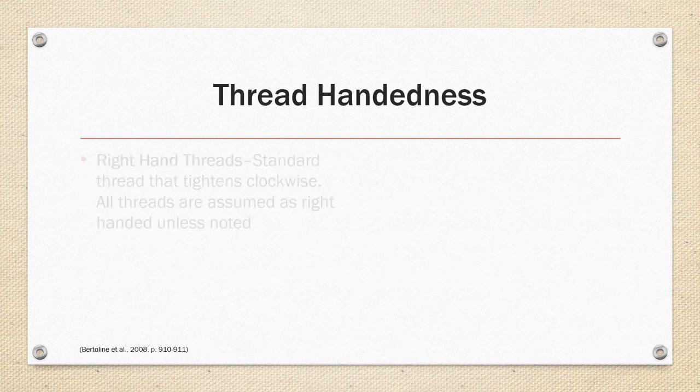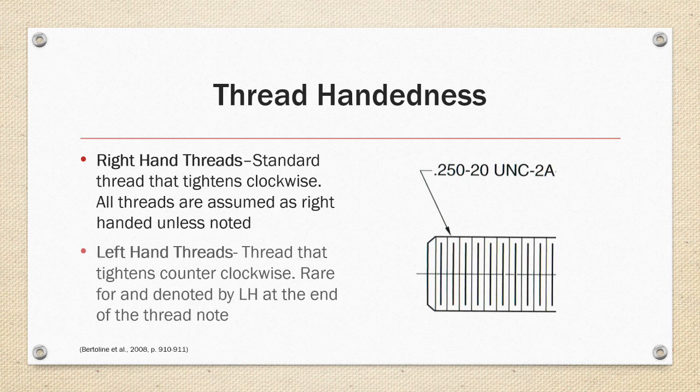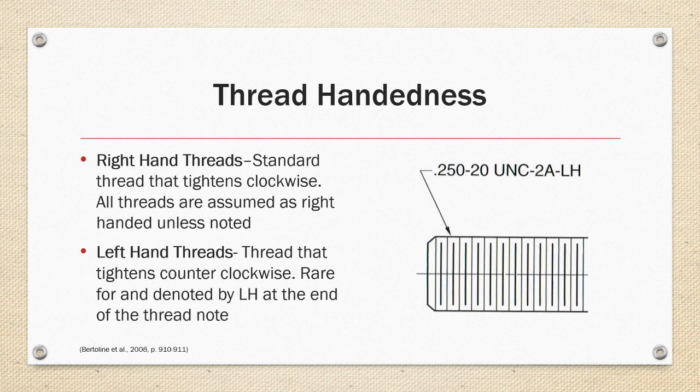Thread handedness. Right hand threads are standard and they tighten clockwise. All threads are assumed to be right-handed unless otherwise noted on the drawing. In the example on the right it's a left-handed thread that tightens counterclockwise. They are rare but it's denoted by an LH at the end of the thread note and they're used in special applications. For example, my table saw, the nut that holds the blade on is a left-handed thread so it self-tightens as the motor spins the blade.